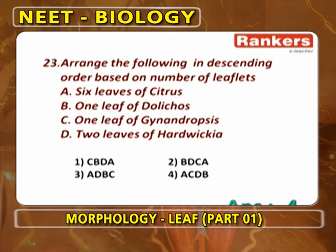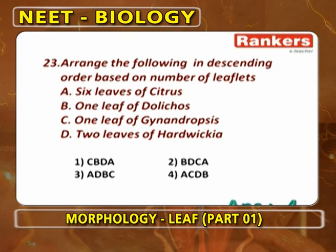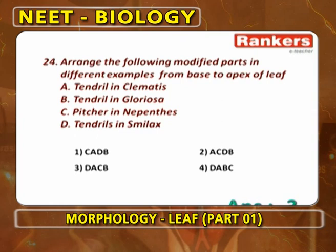Arrange in descending order based on number of leaflets: 6 leaves in Citrus, 1 leaf in Dolichos (3 leaflets), 1 leaf in Gynandropsis (5 leaflets), 2 leaves in Hardwickia (4 leaflets). Answer is ACDB.